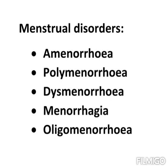Heavy and prolonged menstrual period that disturbs a woman's normal activity is referred to as menorrhagia. It may be due to hormonal imbalance, ovarian dysfunction, uterine fibroids, and may also be due to cancer of the ovary, uterus, or cervix.